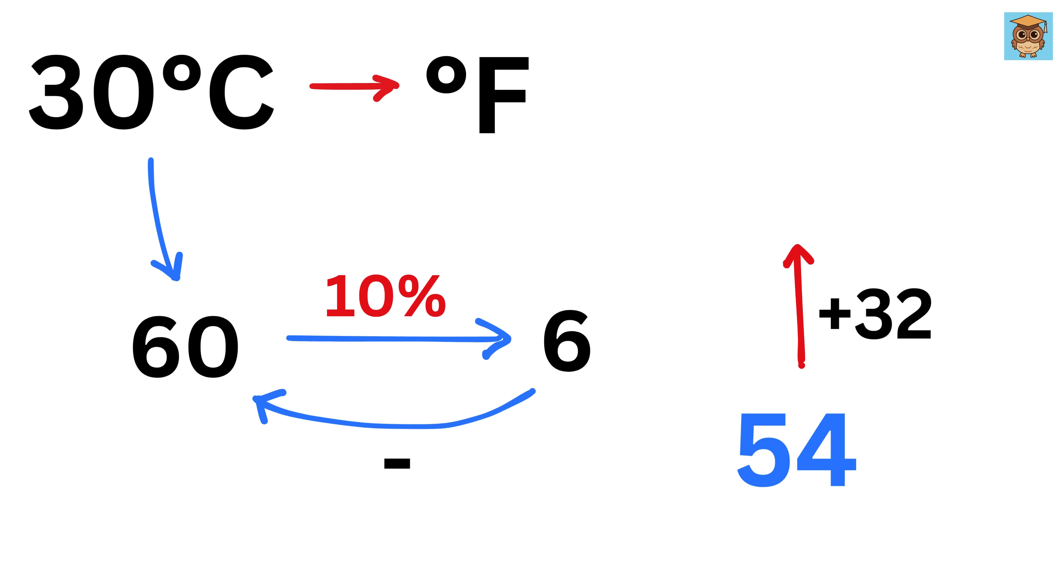Then finally add 32 to this result to make it 86, and that's it. 30 degrees Celsius equals 86 degree Fahrenheit. That was faster than the speed of light, wasn't it?